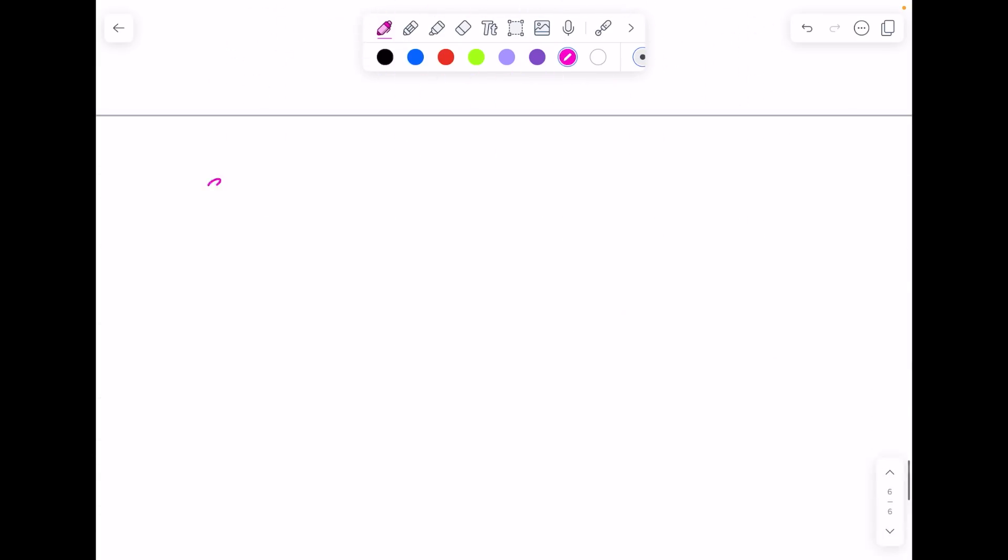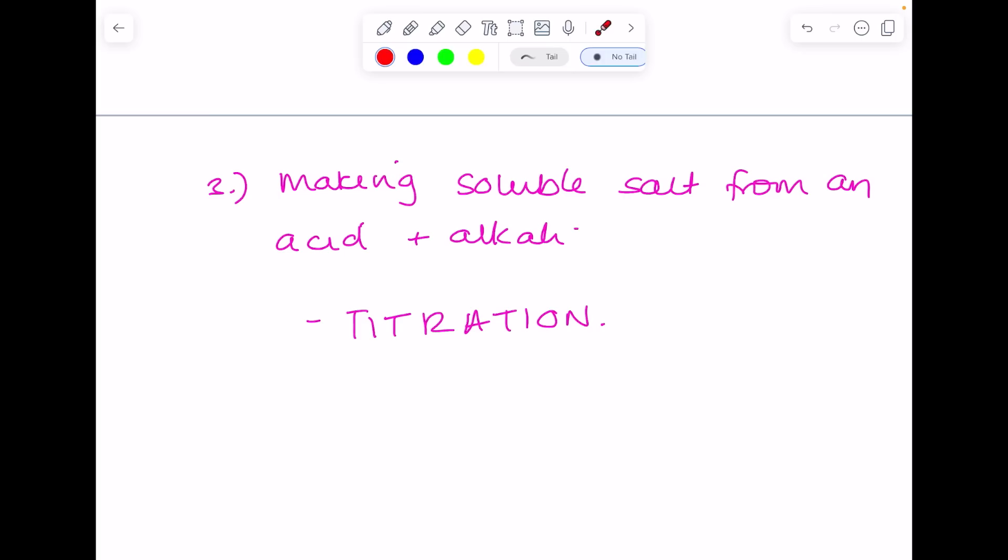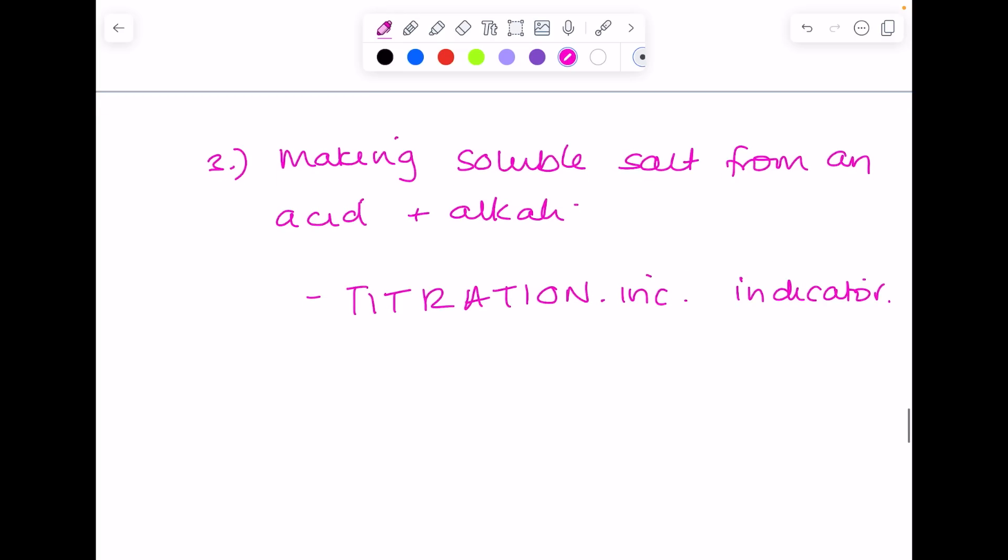And then the toughest one really is making a soluble salt from an acid and alkali. Remember an alkali is a soluble base and this is where you use your titration method. The reason why you need to use the titration method is it allows you to find out the exact volumes of your acid and alkali to use. So you carry out titration with an indicator so that you know that exact point of neutralization. But then you have to repeat the whole thing, but this time without the indicator, because you don't want that getting involved with your salt that you're trying to make. And then you can go straight into the first set of method marks that I pointed out. So you want to heat to evaporate some of the water.